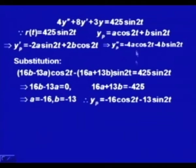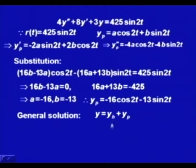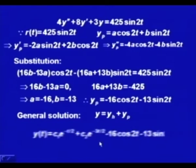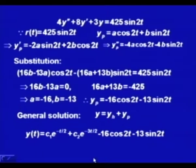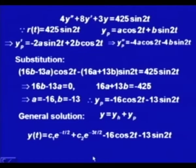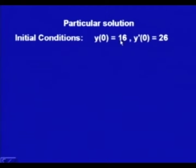The general solution of the non-homogeneous equation is y = y_h + y_p = c₁e^(-t/2) + c₂e^(-3t/2) - 16 cos(2t) - 13 sin(2t). We are given initial conditions y(0) = 16 (displaced 16 m downwards, positive sign) and y'(0) = 26 (velocity 26 m/s downwards, positive sign). We also compute y'(t) = -½c₁e^(-t/2) - (3/2)c₂e^(-3t/2) + 32 sin(2t) - 26 cos(2t).